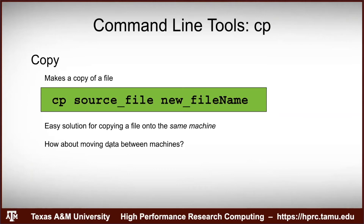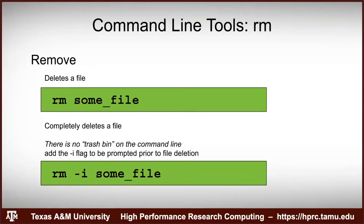To remove a file, use rm. It completely deletes the file — it can be difficult to recover deleted files. There's no trash bin on the command line. I recommend using the -i flag, which prompts you before each deletion. Without -i, 'rm some_file' just deletes it immediately. With -i, it asks your permission before proceeding.